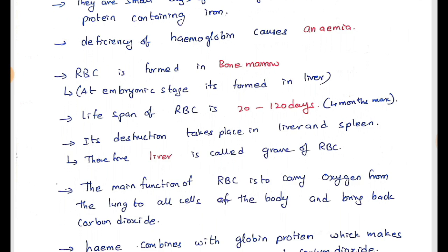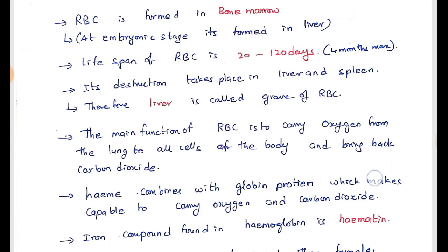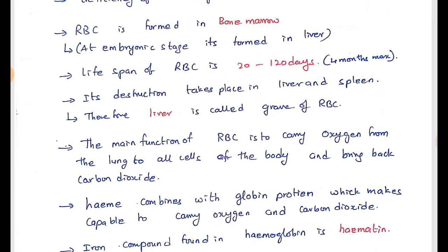Therefore, the liver is called the graveyard of RBC cells. The main function of RBC is to carry oxygen from the lungs to all the cells of the body. Oxygenated blood is transferred from the lungs to all parts of the body, so RBC is the responsible component that carries oxygen. Hemoglobin contains a component called heme, which combines with globin protein making it capable of carrying oxygen as well as carbon dioxide. The iron compound found in hemoglobin is hematin.